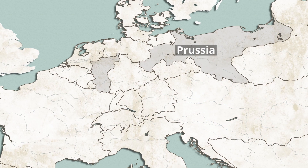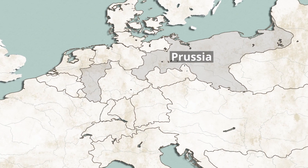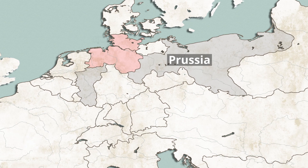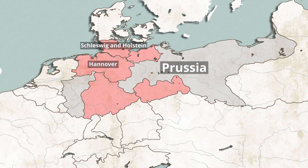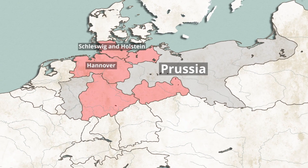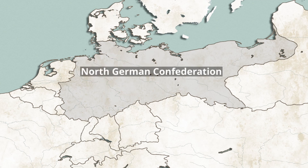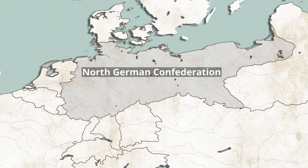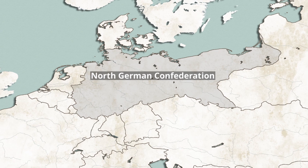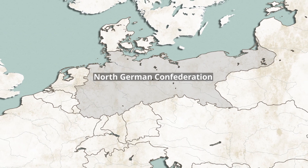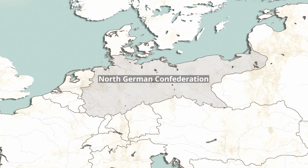Following the North German Confederation Treaty, pushed by Prussia, Schleswig and Holstein, and Hanover, along with several other smaller German states, were annexed by Prussia and turned into the North German Confederation, following the adoption of the North German Constitution, which established a flag and governmental and administrative structures.